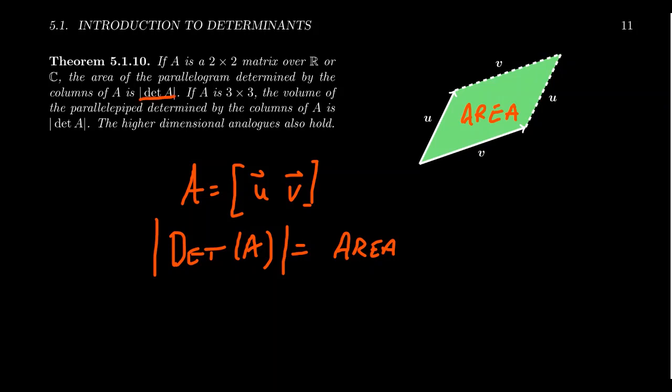This is also true with respect to 3x3 matrices. Associated to the three columns of the matrix, there is a parallelopiped, which is like the three-dimensional analog of the parallelogram. The idea is you stack parallelograms on top of each other and make some type of three-dimensional object.